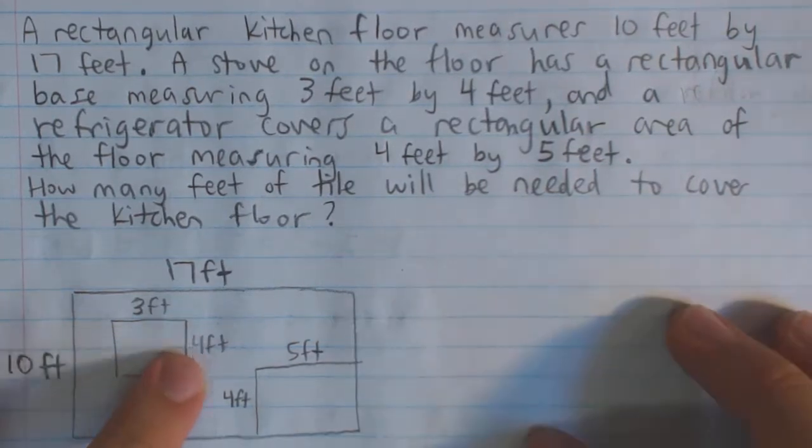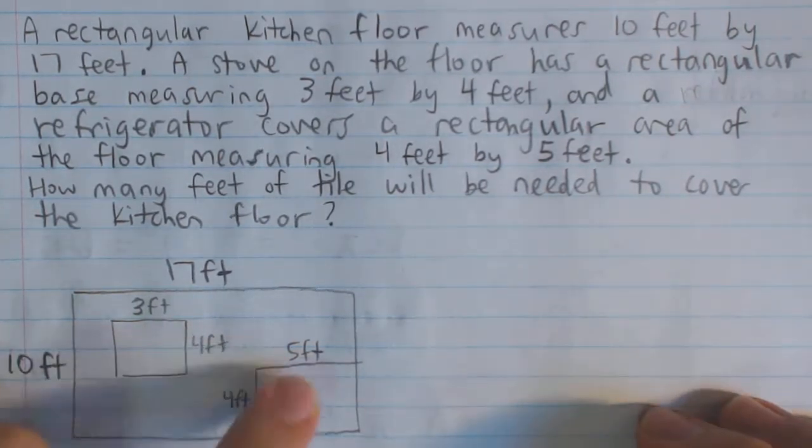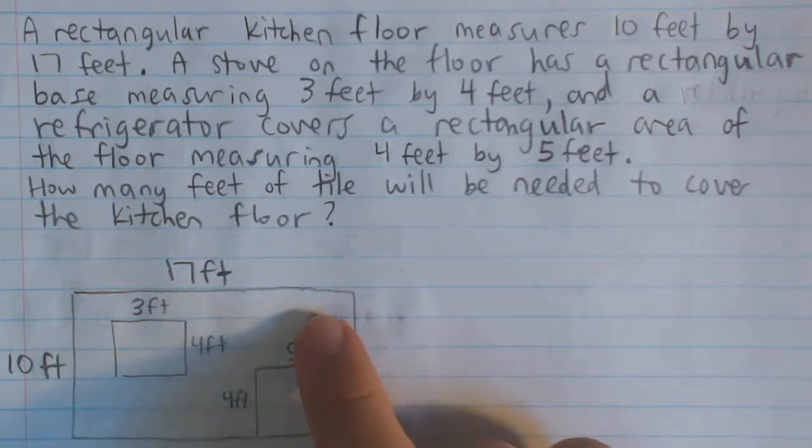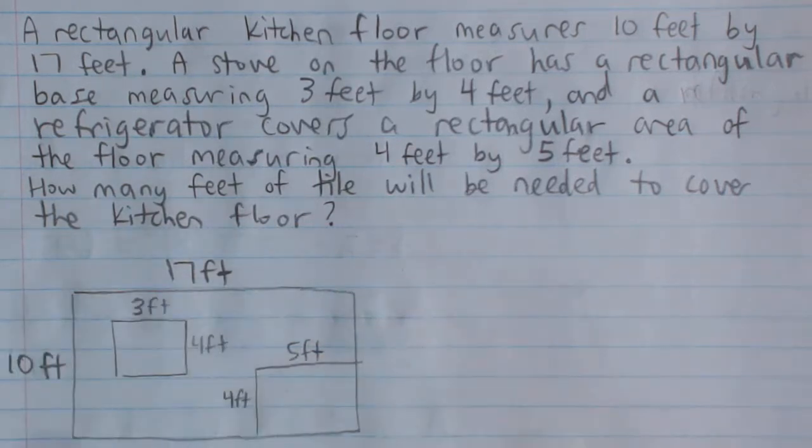You can place them anywhere you want. They are 3 feet by 4 feet and 4 feet by 5 feet. We're trying to find what is the tile, or what is the surface area that will be needed, or the square feet of tile that will cover this part that's not covered by either the stove or the refrigerator.